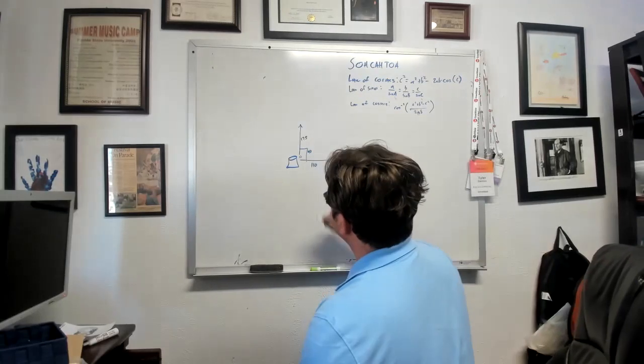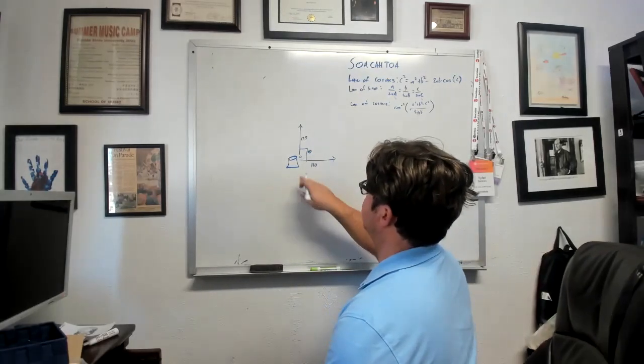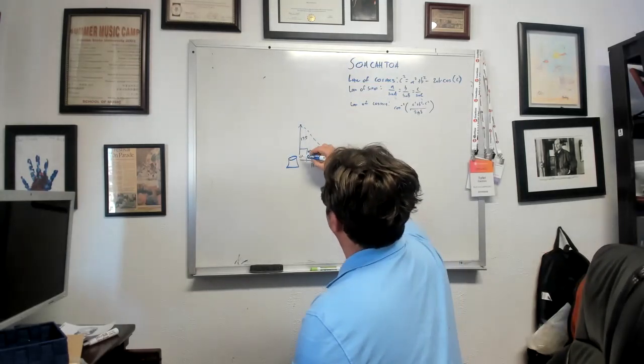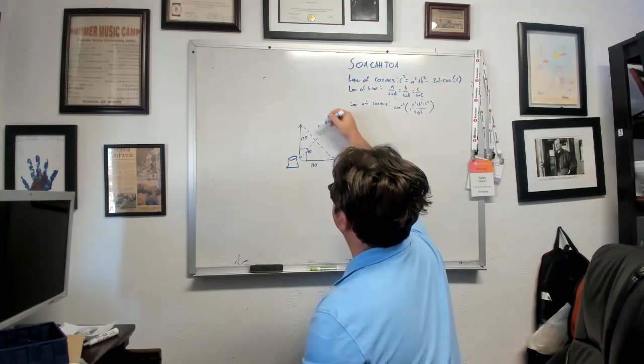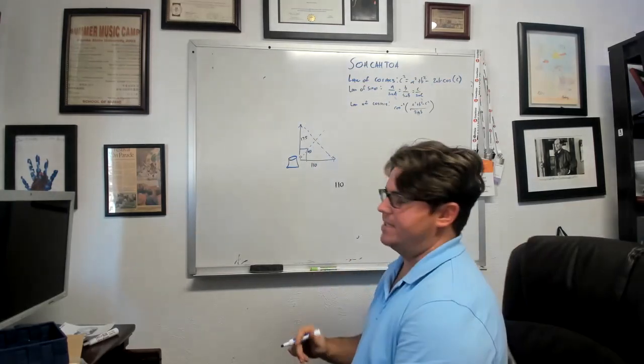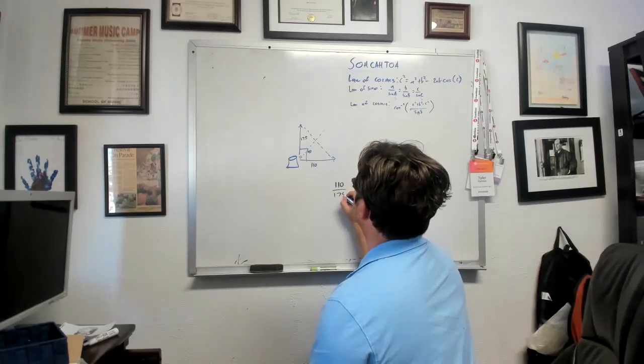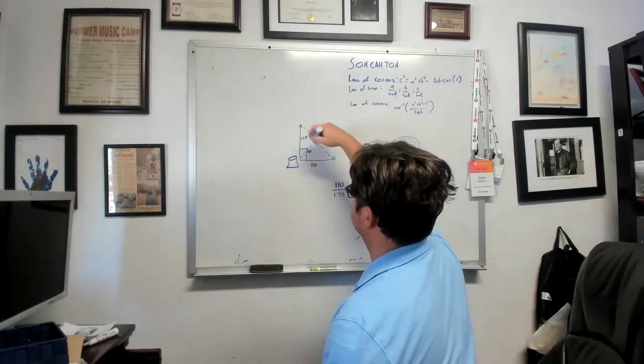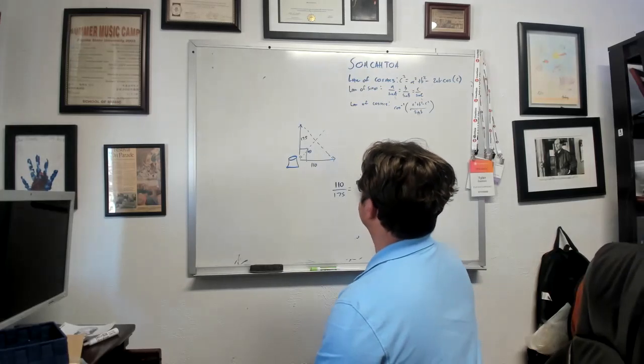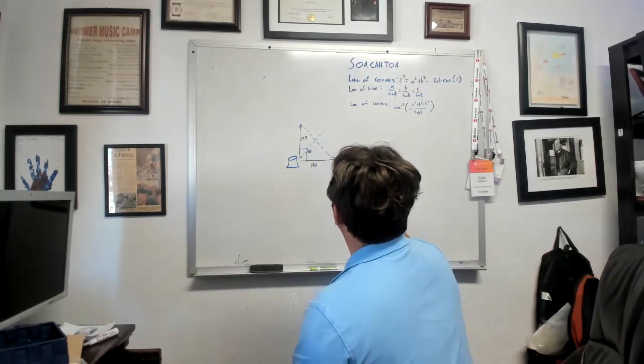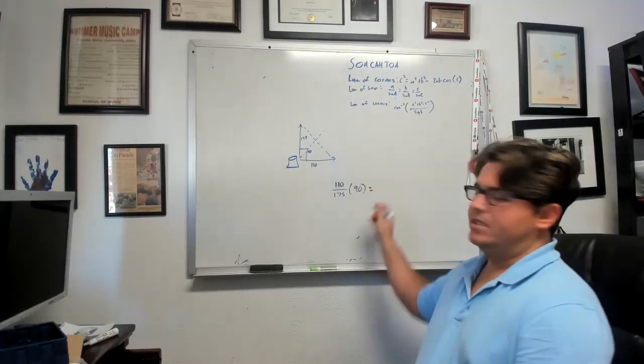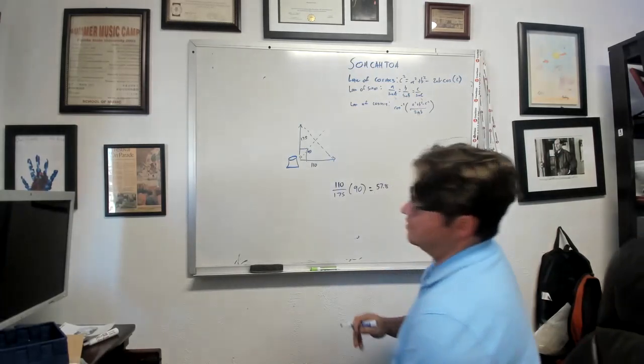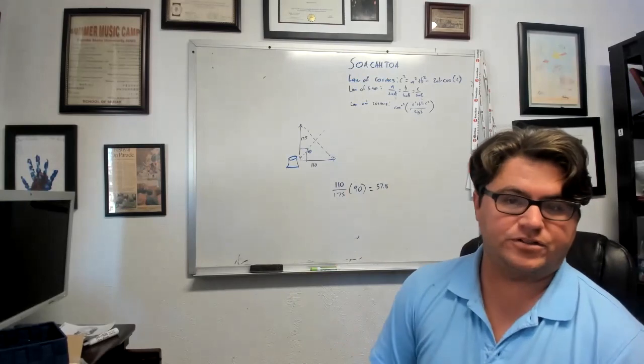And so this is a 90 degree angle. So we can simply say that 110, so let's draw a triangle here and we know that this is going to be coming up more towards the 175 than it is the 110. So we can say 110 over 175 gives us our ratio of the angle. And so we can multiply that times 90 and that will give us 57.8. So there is our angle for the first question.